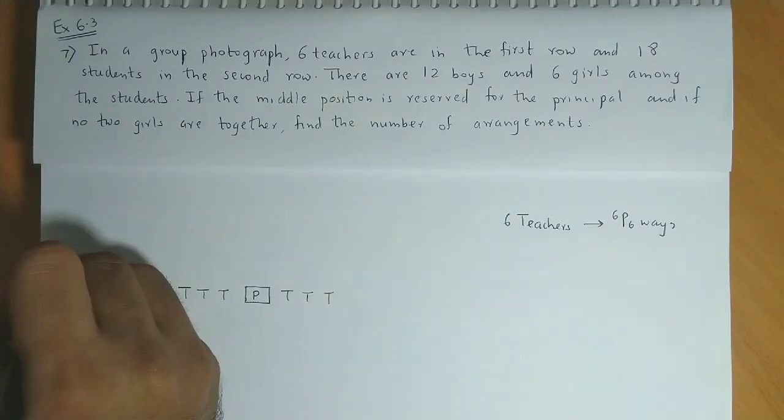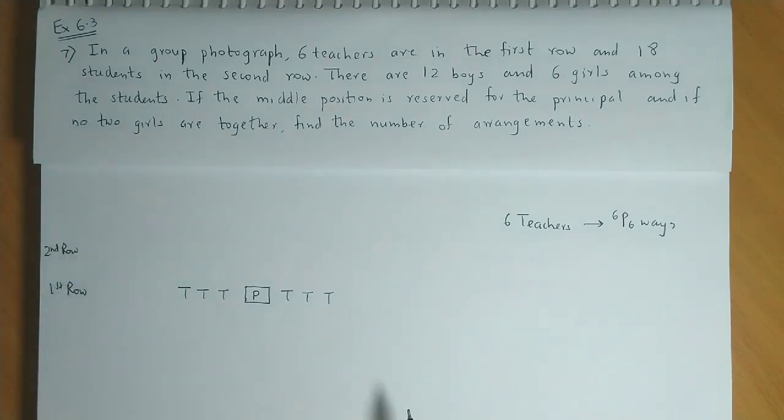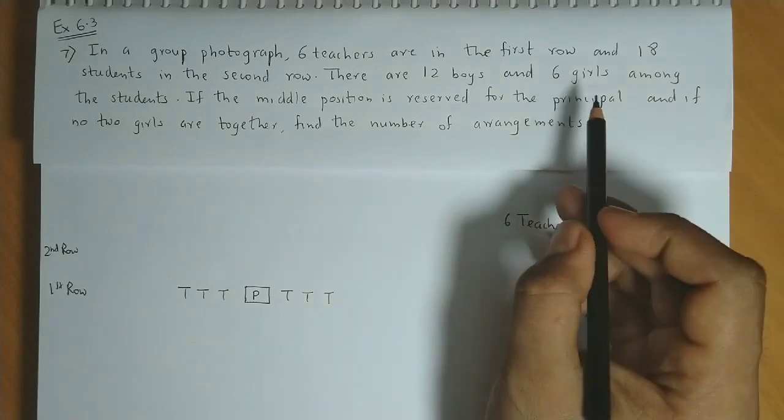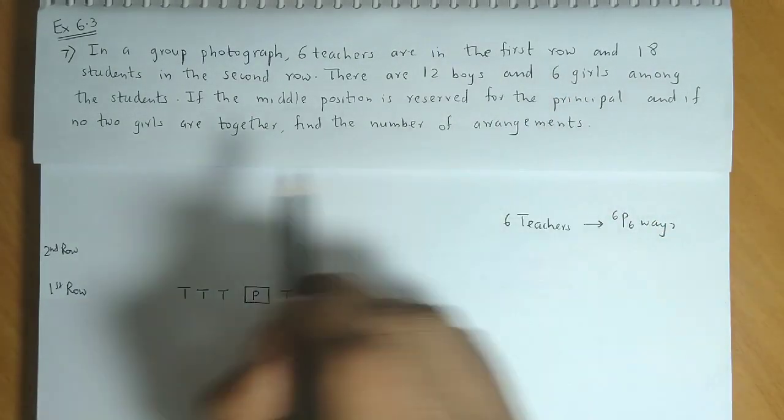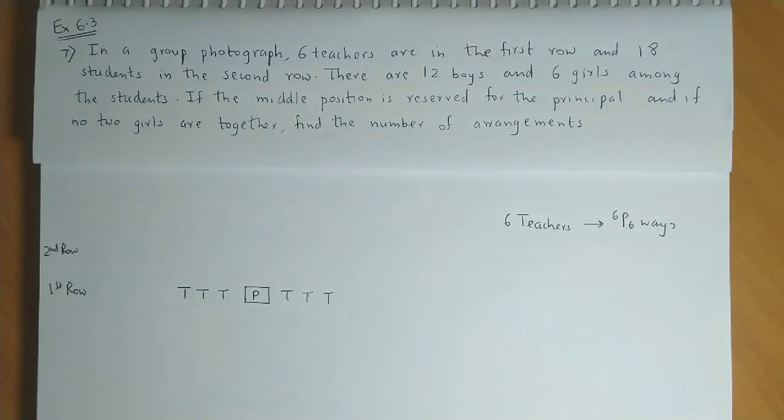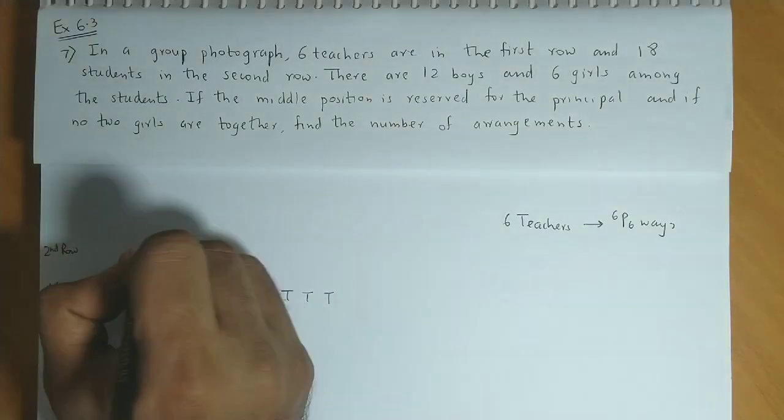Now, let's go to the second row. In the second row, there are 18 students. There are 12 boys and 6 girls. Condition is given that no two girls are together. Let's see how we could arrange this.